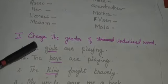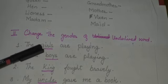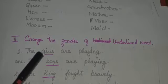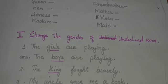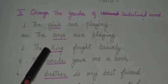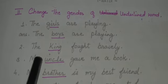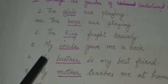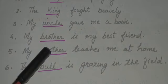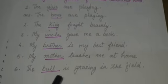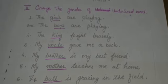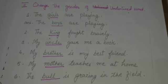The next exercise is to change the gender of the underlined words. The first one has been done for you: 'The girls are playing' — change 'girls' to 'boys', so it becomes 'The boys are playing.' Second: 'The king fought bravely' — write the feminine gender of king. Third: 'My uncle gave me a book' — write the opposite of uncle. Fourth: 'My brother is my best friend' — write the feminine gender of brother. Fifth: 'My mother teaches me at home' — write the masculine gender of mother. Sixth: 'The bull is grazing in the field' — change the gender of bull. I hope you have all understood the different kinds of gender and are able to complete your work.